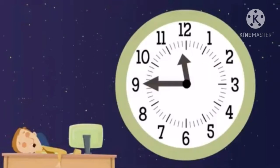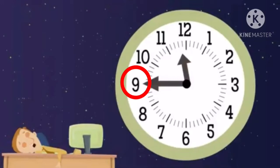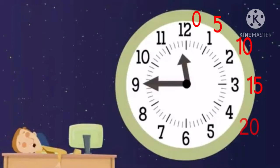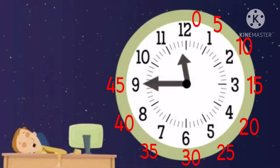Now, where is the minute hand pointing? That's right, at the number nine. And so, children, we are going to count by fives. Start with twelve, which is zero, five, ten, fifteen, twenty, twenty-five, thirty, thirty-five, forty, forty-five. So, children, how many minutes is this showing? Yes, it is forty-five minutes.